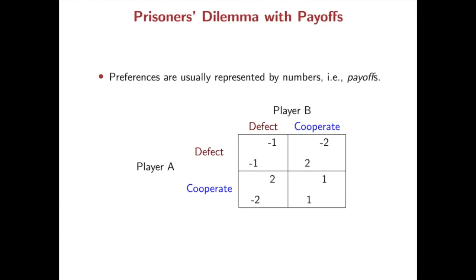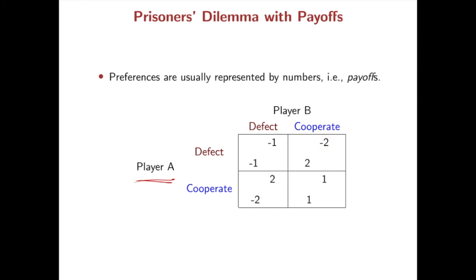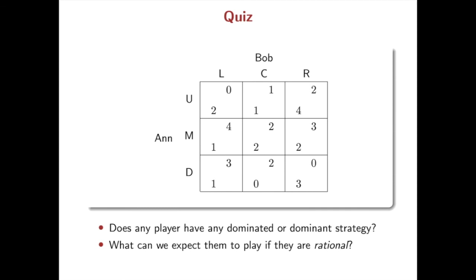Preferences are usually represented by numbers, which is called the payoff. The row player, player A, carries her own payoff appearing on the left in each outcome, while the column player is looking at his own payoffs on the right of each cell. Okay, so this is the end of video one. Please do this quiz before moving to the next video. It will be discussed later. Thank you.